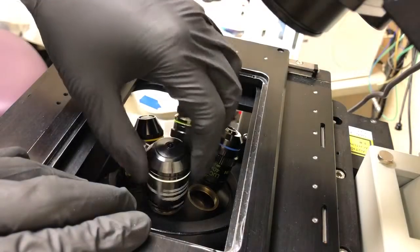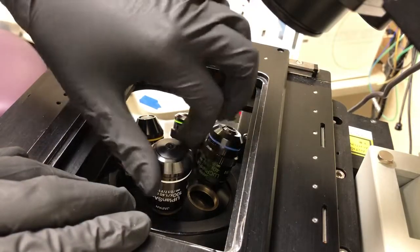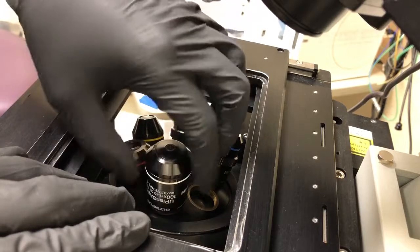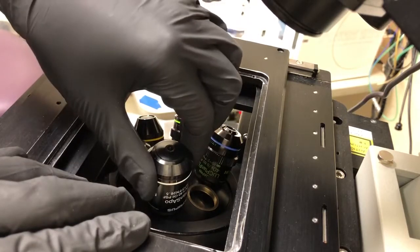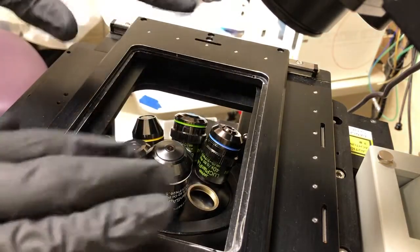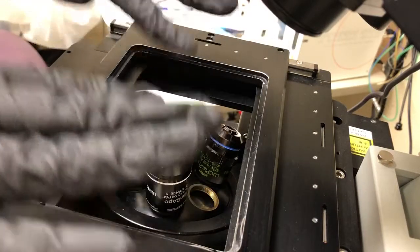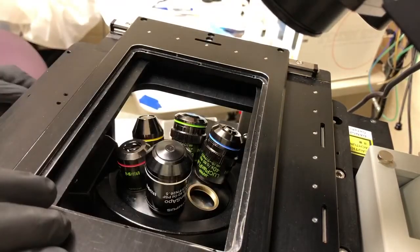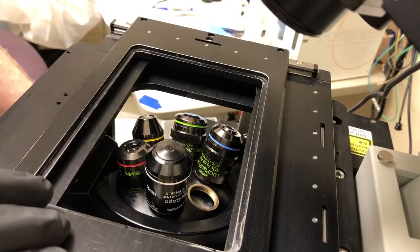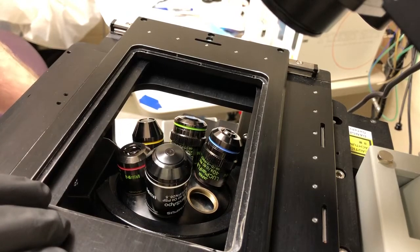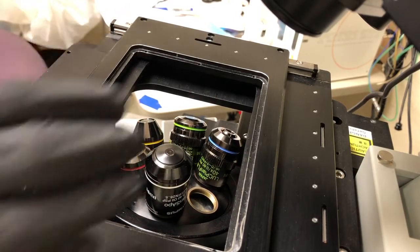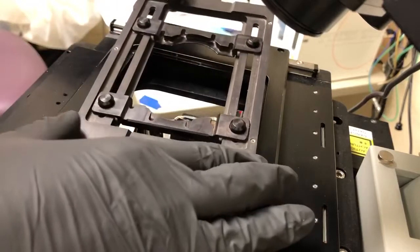I've placed it in there. Now, when I put the stage on, I want to make sure this is far away. So I'm going to click Escape on the microscope. That lowers the objective. Now I'll very gently put this in without banging into the objective.